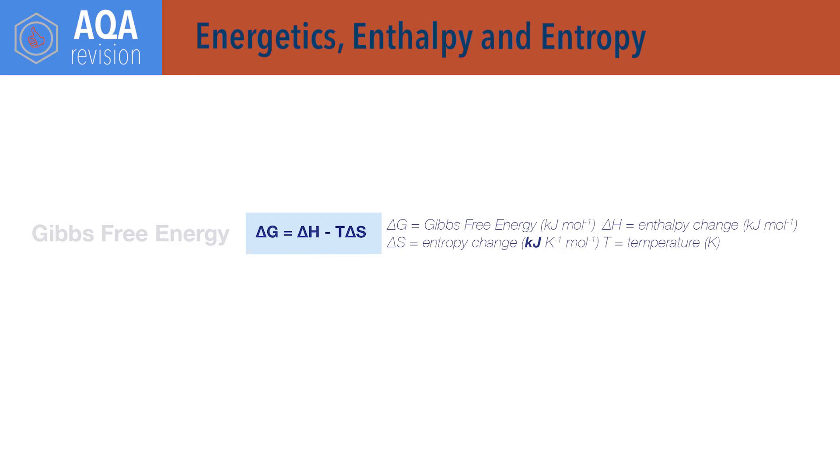And delta S is change in entropy. Note that the units of entropy are usually in joules per Kelvin per mole. However, in this equation, change in entropy must be given as kilojoules per Kelvin per mole. Divide delta S by 1000 to do this. Delta S change in entropy equals sum of entropies of products minus sum of entropies of reactants.